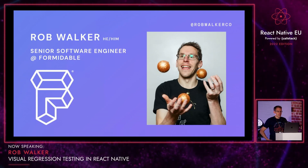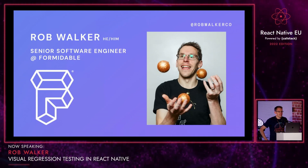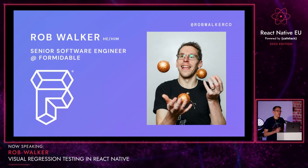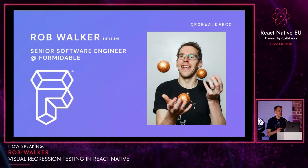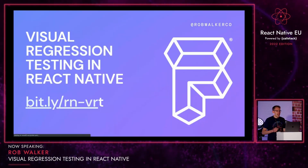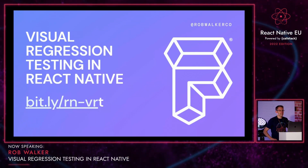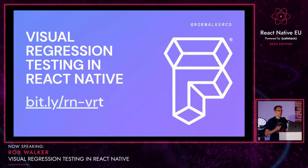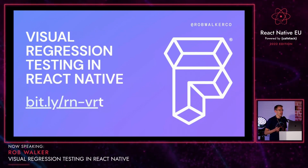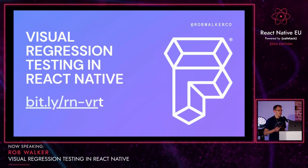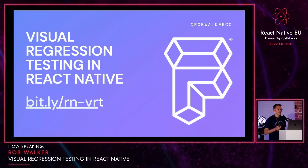Hi, my name's Rob Walker, my pronouns are he/him, and I am a senior software engineer at Formidable. My talk today is about visual regression testing in React Native. If you'd rather watch these slides on your own device, you can access them now at bit.ly/rn-vrt.